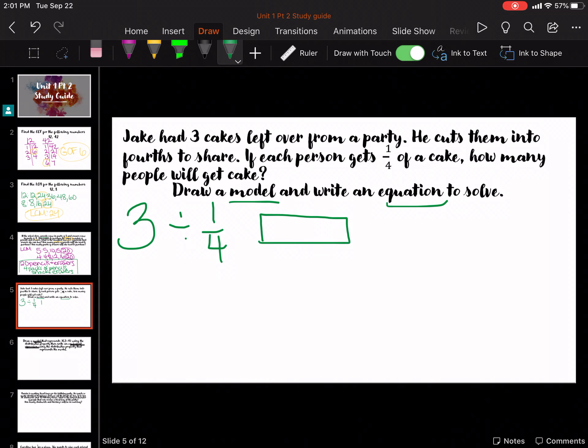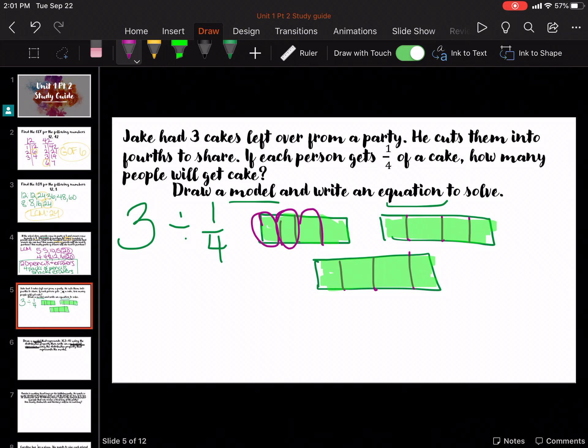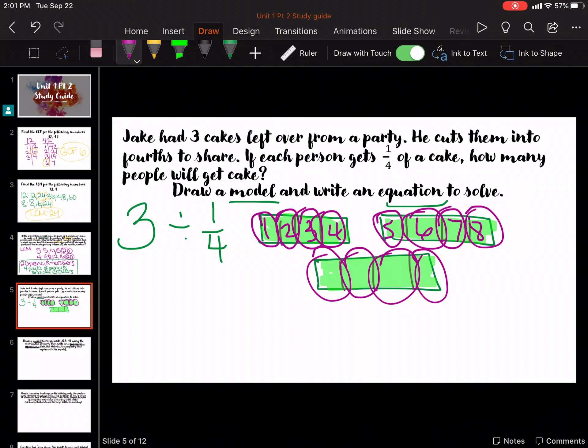3 full cakes. Dividing it into 4ths. And you get the whole thing. Okay, let's see how many 4ths there are. 1, 2, 3, 4, 5, 6, 7, 8. 1, 2, 3, 4, 5, 6, 7, 8. 9, 10, 11, 12. So it is 12 people.